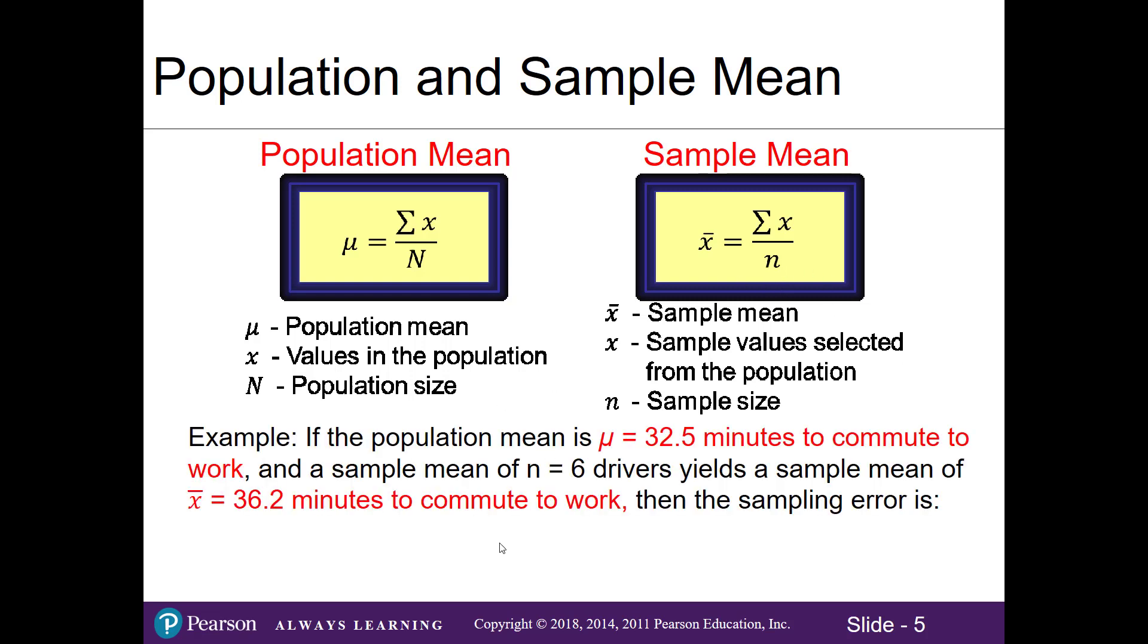Here in our example, if the population mean μ equals 32.5 minutes to commute to work and then we take a sample mean of six drivers that yields a sample mean of 36.2 minutes to get to work, then for our sampling error we'll take the sample mean minus the population mean and we get a sampling error of 3.7 minutes.